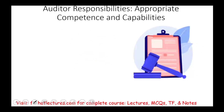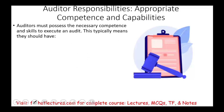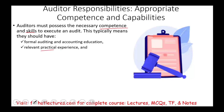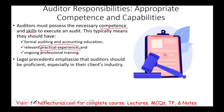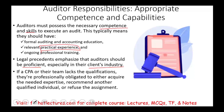What are the auditor's responsibilities? They have to be competent and capable. The auditor must possess the necessary competence and skills to perform an audit — formal auditing and accounting education, relevant practical experience, and ongoing professional training to stay up to date. Some legal precedents emphasize auditors should be proficient especially in their client's industry. If a CPA or their team lacks the qualifications, their professional obligation is to either acquire the needed expertise, hire someone to help, or refuse the assignment.